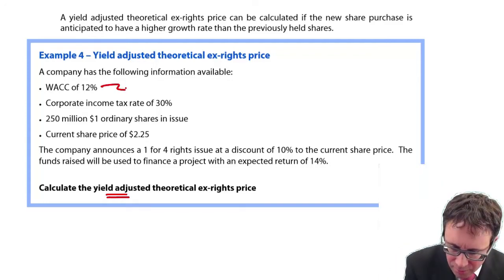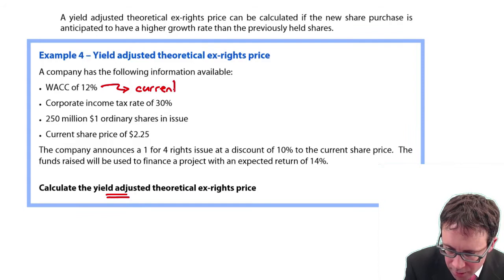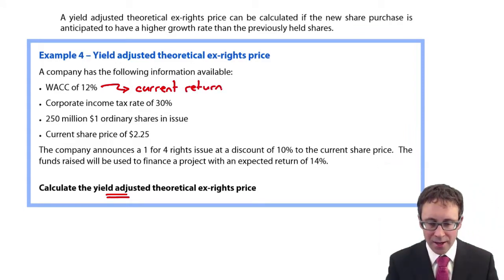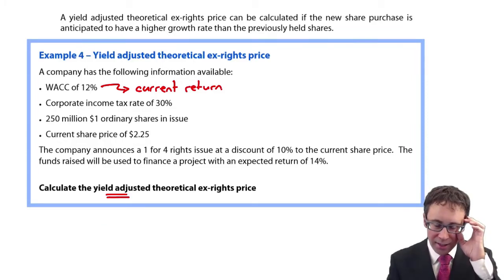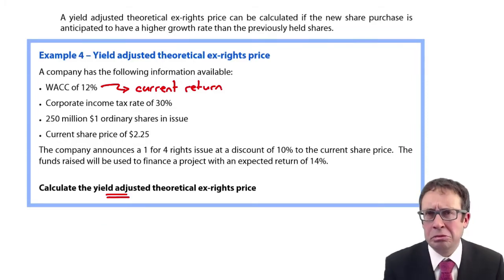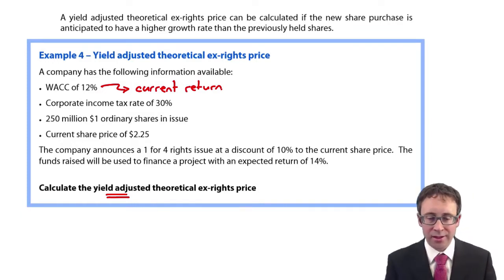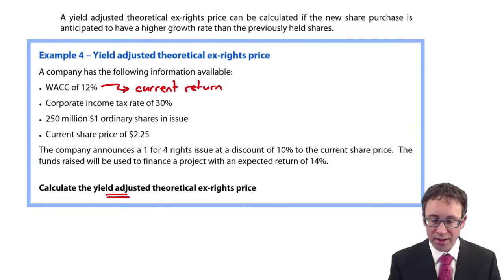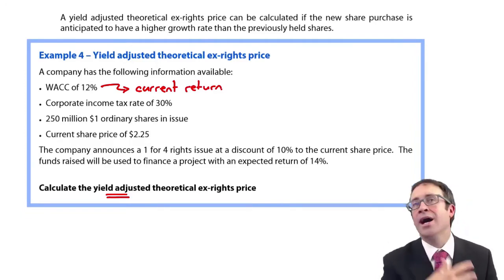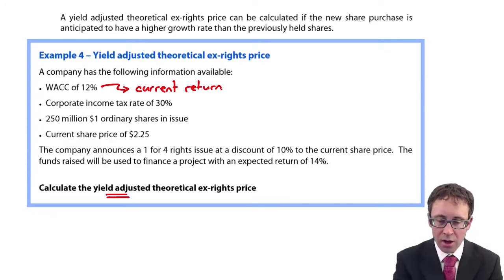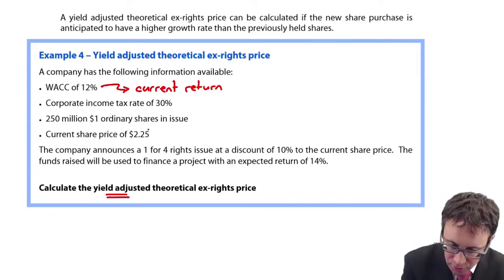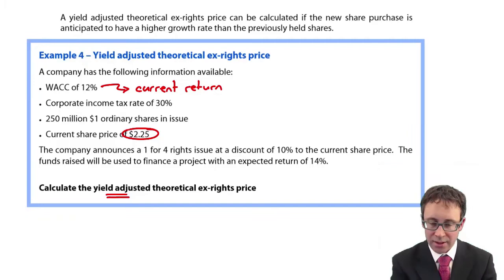Effectively, that's your current return. That's what the shares are currently generating. Corporate income tax rate of 30% doesn't really make much difference there, but there we go. It then goes on to say 250 million $1 ordinary shares. So that's the amount of shares in issue. The current share price, if you're working out your ex-rights price and also your yield-adjusted ex-rights price, you need to start with your current share price. That's a good start: $2.25.